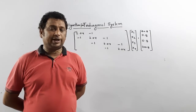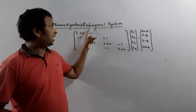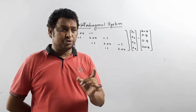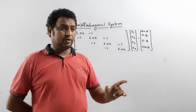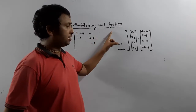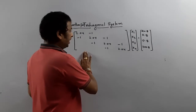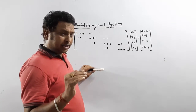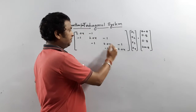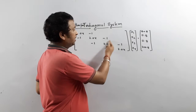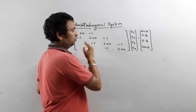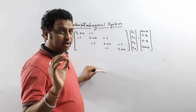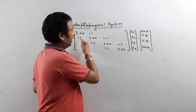Hello friends, today I am going to explain the Thomas algorithm for tri-diagonal systems. It is very useful for computational mathematics. The first question that comes to mind is: what is a tri-diagonal system? If you have any matrix, it has one principal diagonal, an upper diagonal, and a lower diagonal. If the given matrix has only these three diagonal elements and all remaining elements are zero, that system is known as a tri-diagonal system.